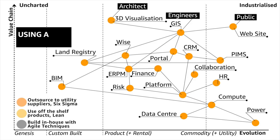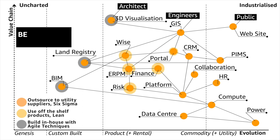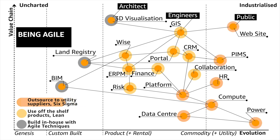One thing to note here: agile is a very popular term today, and there is a world of difference between being agile and using agile. Using agile means using methods like extreme programming, which are appropriate for only part of the map. Whereas being agile is about using appropriate methods — which means outsourcing things when they should be outsourced, off-the-shelf products when needed, and building in-house with agile techniques only when that is appropriate.